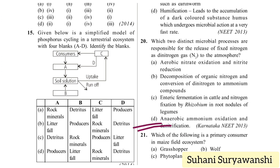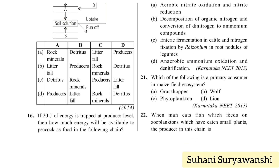In the two-step process: first there will be anaerobic ammonium oxidation, and in the second step there will be denitrification. Which of the following is a primary consumer in a maize field ecosystem? Options: grasshopper, wolf, phytoplankton, or lion. Phytoplankton are producers and lion is apex consumer, so the answer is grasshopper, option A.